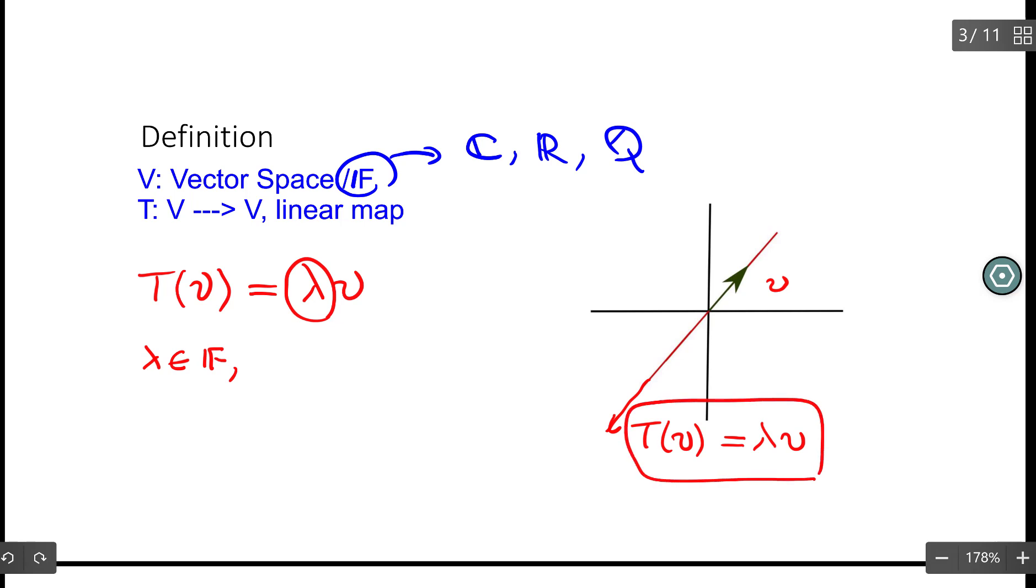We are interested in the cases that v is non-zero. Because if v equals zero, T(0) is always zero, it doesn't give us any information. And if that's the case, we call this v an eigenvector and λ an eigenvalue.